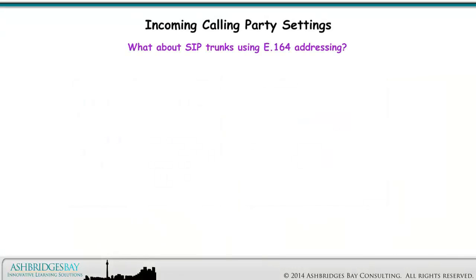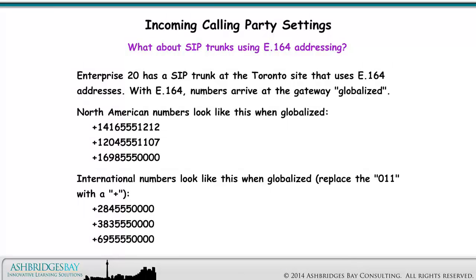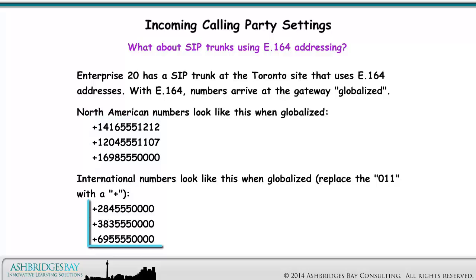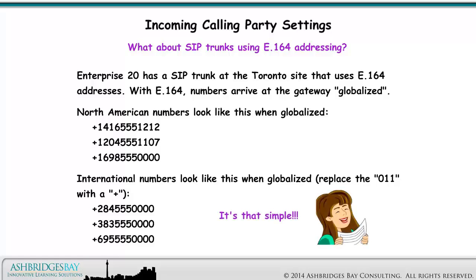We can fix this if we use E.164 addressing on the SIP trunk. What about SIP trunks using E.164 addressing? Enterprise 20 has a SIP trunk at the Toronto site that uses E.164 addresses. With E.164, numbers arrive at the gateway globalized. North American numbers look like this when globalized; international numbers look like this — replace the 011 with a plus sign. It's that simple!